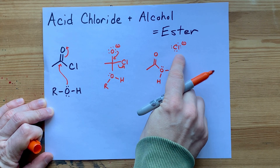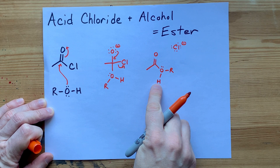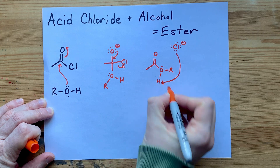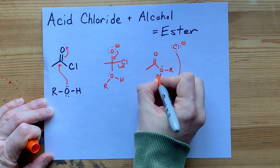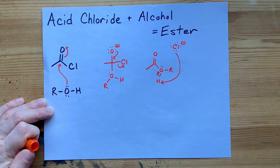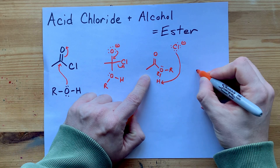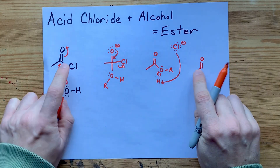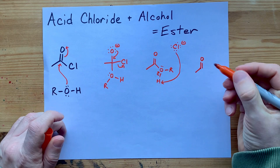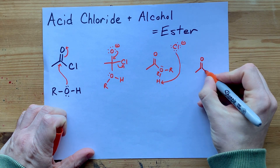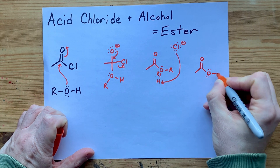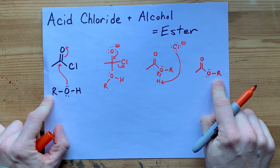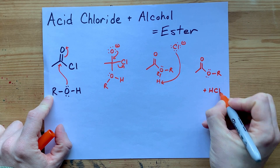That chloride is what we usually show as taking away this H, or deprotonating the oxygen. There is a lone pair — perhaps it likes that — and then the pair of bonding electrons now belong to the oxygen. So our final product has that same carbon chain on the left, a double bonded oxygen, single bonded to an oxygen that is itself single bonded to the R group from the alcohol. And you have HCl as a byproduct.